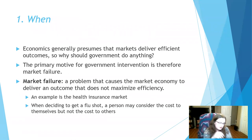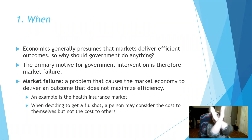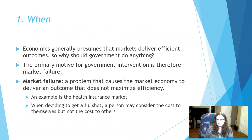First is the when question — when should government intervene? Economics generally presumes that markets deliver efficient outcomes. We have our supply and demand meeting at equilibrium, and most of the time that's true, that markets can deliver an efficient outcome. But sometimes there are market failures, and why government intervention exists in the first place is to try to correct for market failures that might not have been otherwise addressed.